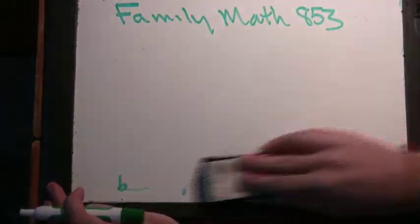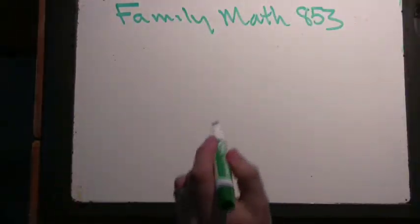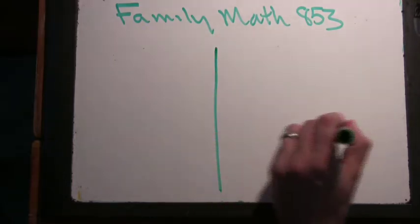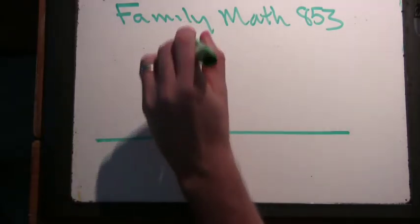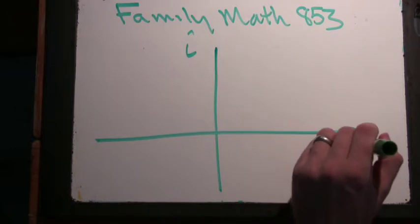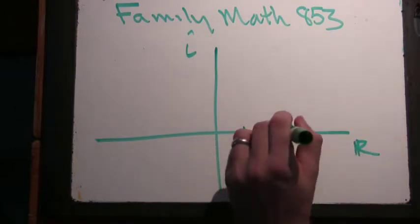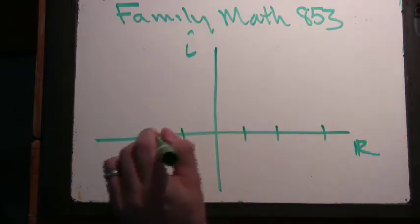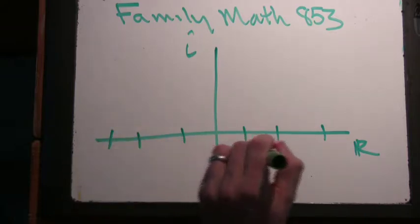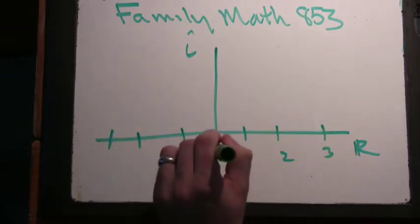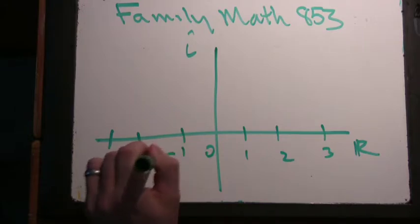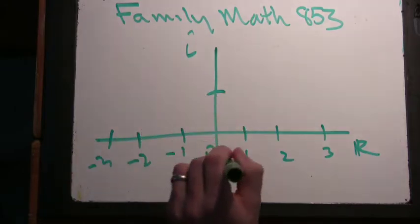So Gaussian integers are a version of integers but in the complex plane. So we have this will be the i-axis and this will be the real axis. And so I have my regular integers here: 1, 2, 3, 0, minus 1, minus 2, minus 3, and then I have the i-axis.